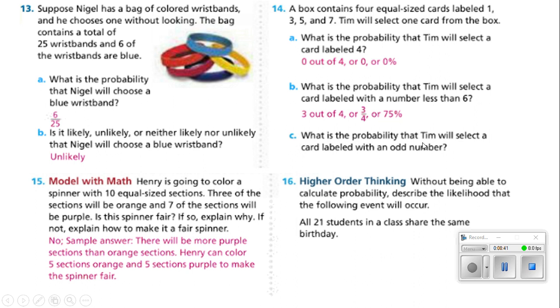What is the probability that Tim will select a card labeled with an odd number? Well, odd numbers are like 1, 3, 5, and 7. Well, all of them are odd. So, that means you've got a 100% chance, 4 out of 4 chance that he's going to select an odd number.